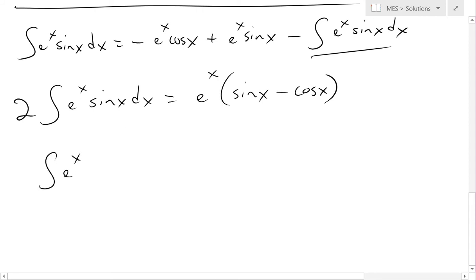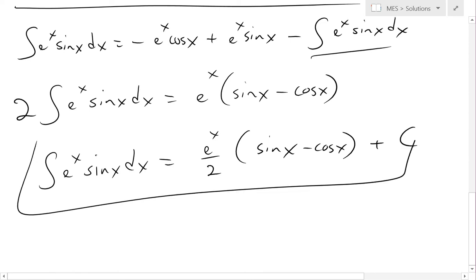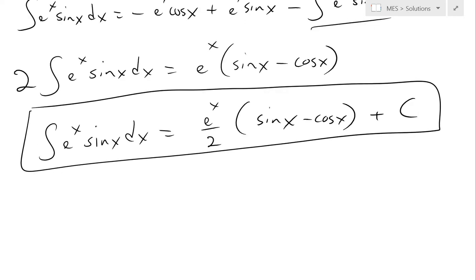Dividing both sides by two and adding the constant of integration, our final answer is: the integral of e^x sine x dx equals e^x divided by two, times (sine x minus cos x), plus C.